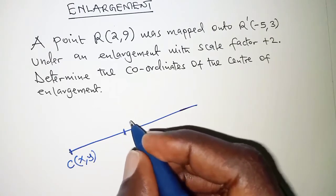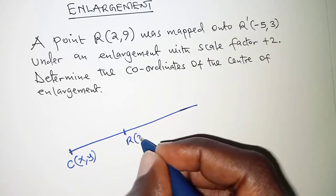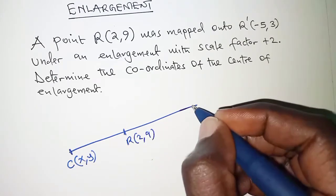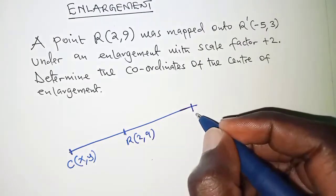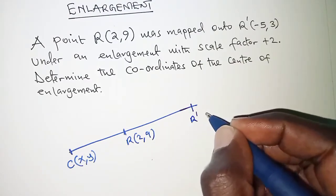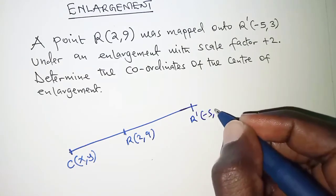If we have the object at this point, we have R is (2,9) and then the image is R' which is (-5,3).